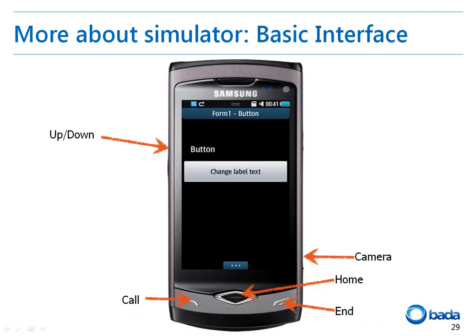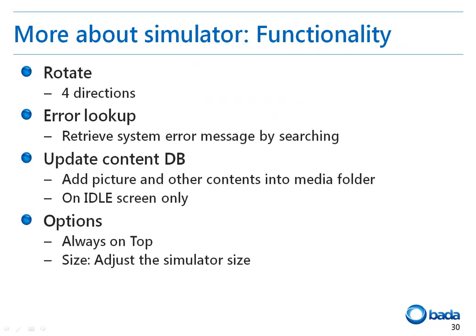Now let's have a look at the simulator functions in detail. The appearance of the simulator interface is the same as the Wave Phone, and the buttons are also the same. There are volume buttons on the left, and there are also call, end, home, and camera buttons. The simulator provides functions to rotate the simulator, to look up errors, to manage the database, to set the simulator to always on top, and to resize the simulator screen.